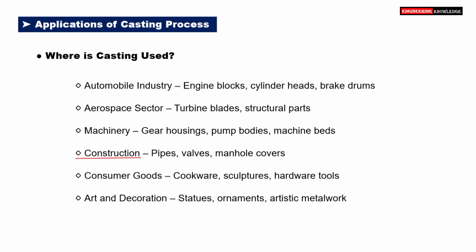In the construction industry, casting is ideal for making pipes, valves, and manhole covers, which must be durable and able to withstand harsh environments. For consumer goods, items like cookware, sculptures, and hardware tools are often made using casting, thanks to its ability to produce both functional and decorative parts. Casting also allows artists and craftsmen to create statues, ornaments, and intricate metalwork, offering both creative freedom and structural reliability. From heavy-duty industrial parts to artistic creations, casting plays a key role in a vast array of fields, making it one of the most important processes in modern manufacturing.